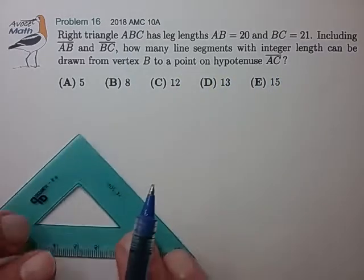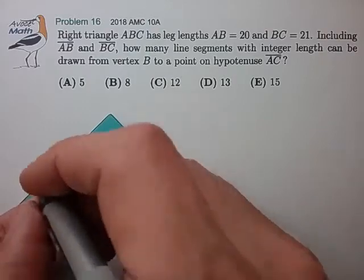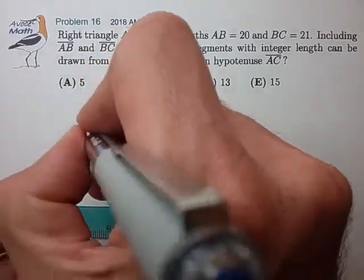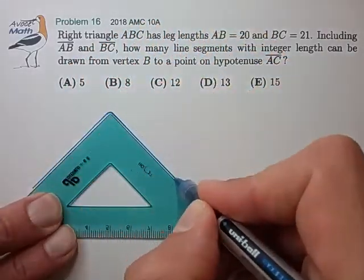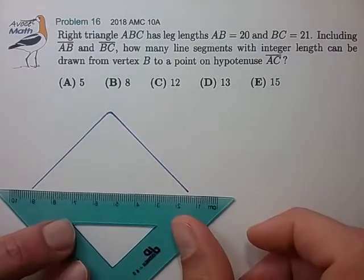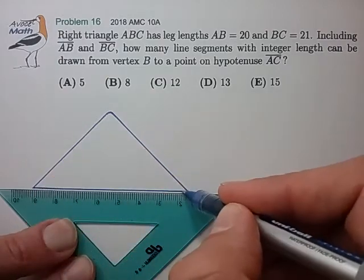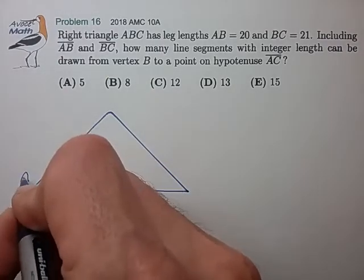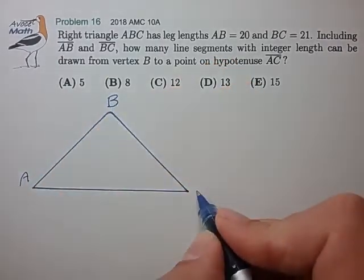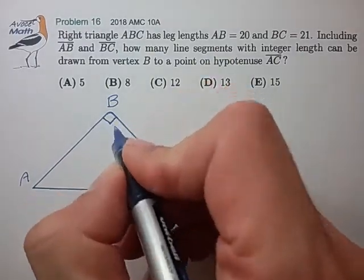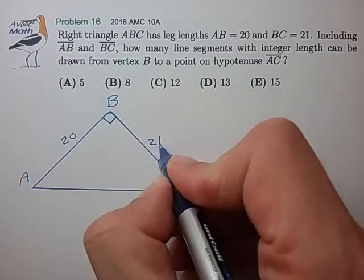Alright, let's draw in our right triangle. The right triangle looks something like this. Right angle at B, AB=20, BC is 21.